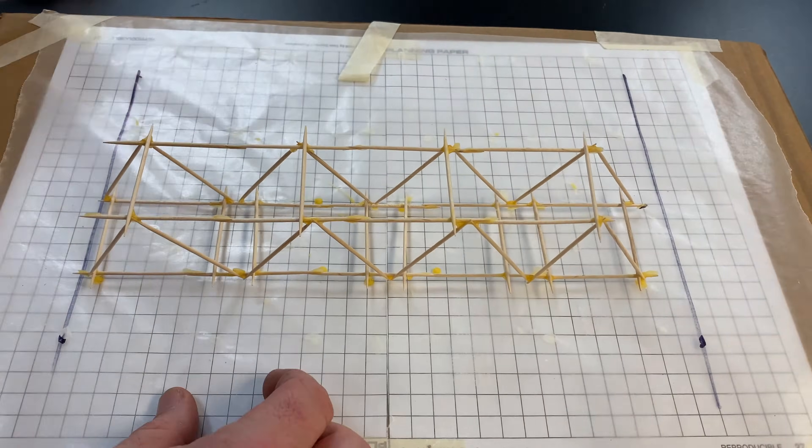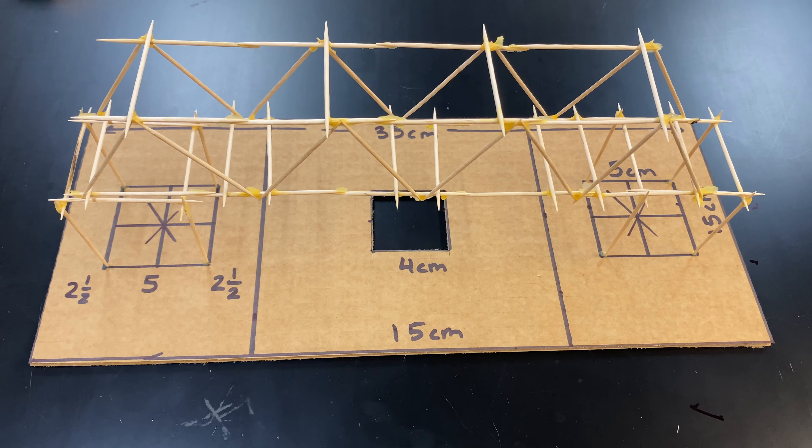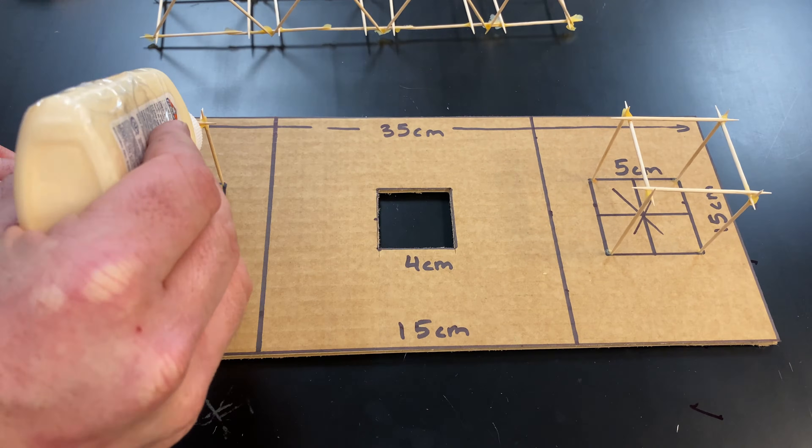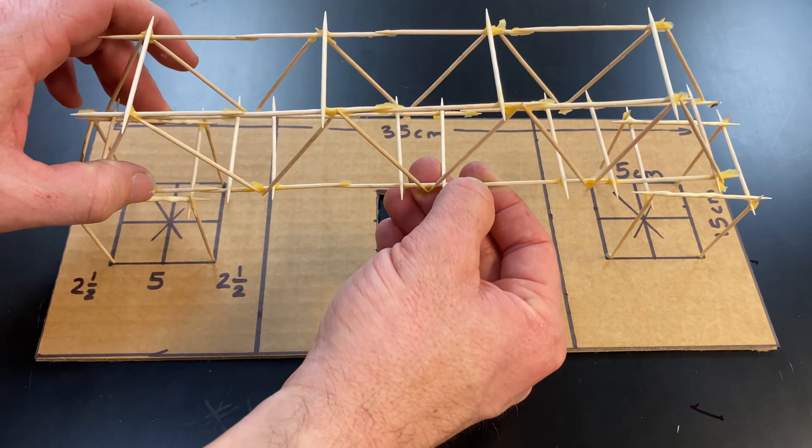It's time to place our bridge on our supports. Pay close attention to where the toothpicks are touching. That's where the glue needs to go. If allowed, you could use some clips or tape to temporarily hold things together.